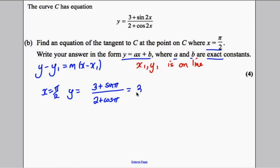OK, so we know a point on the line x1, y1 is pi by 2 and 3. So that gets us at least one or two of these marks. That gets us two of the marks going there.